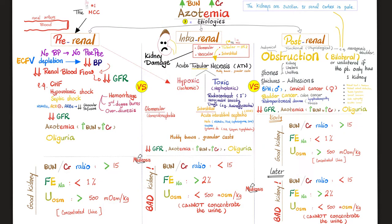Any cause of extracellular fluid volume depletion will decrease blood pressure, decrease renal artery perfusion, and the kidney will suffer — this is pre-renal azotemia. Examples include congestive heart failure, hypovolemic shock after hemorrhage, third-degree burns (loss of plasma and albumin), over-diuresis, and septic shock — because shock means inadequate tissue perfusion. Certain drugs also decrease kidney perfusion: NSAIDs, ACE inhibitors, and angiotensin receptor blockers.